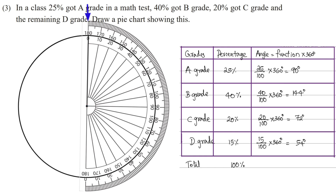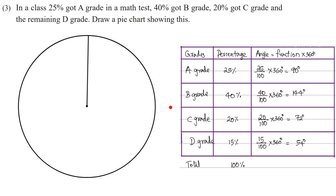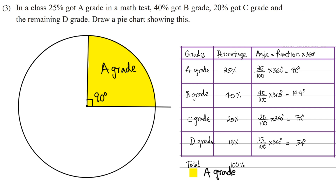We measure 0, 10, 20, 30, 40 and so on up to 90 degrees. We draw the circle center and join to the center — this is the 90-degree angle line. This is the A-grade part. I will show it with a color.